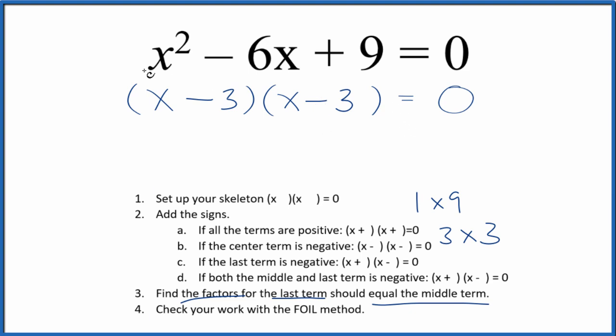And we've factored the equation x squared minus 6x plus 9. We should check our work, though, with the FOIL method.